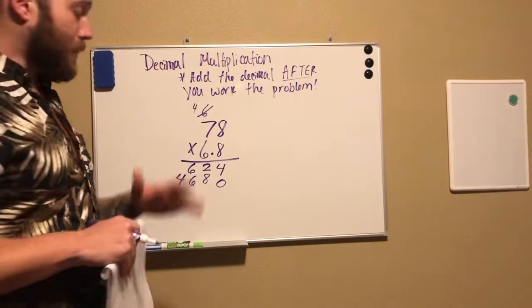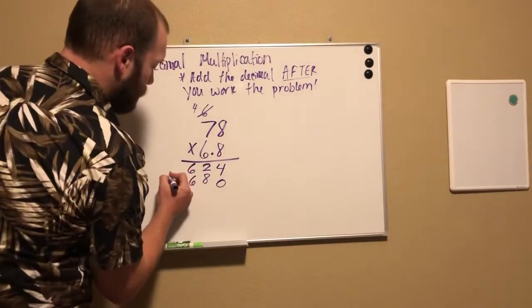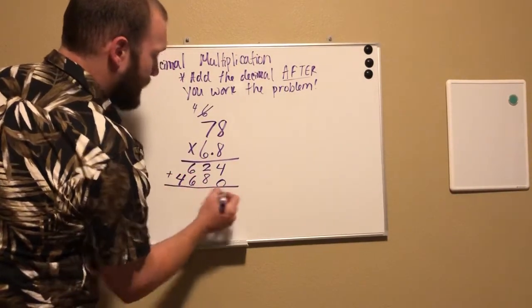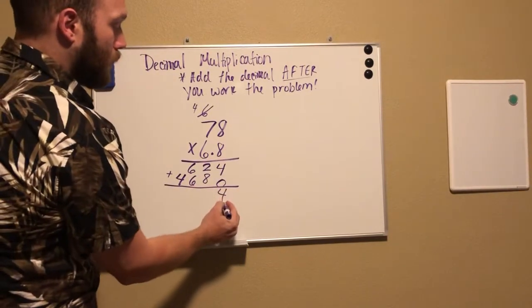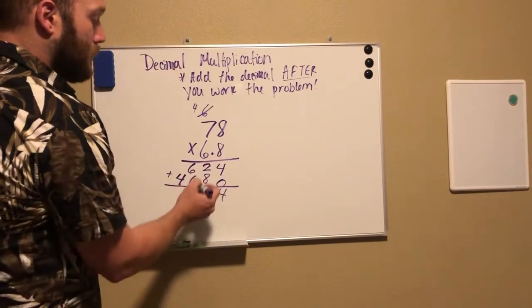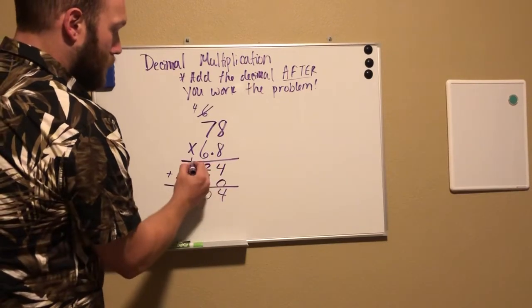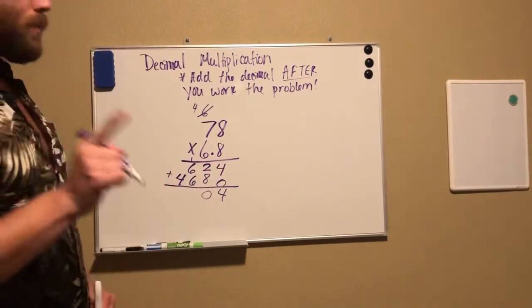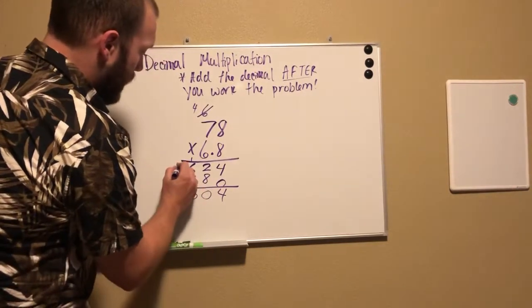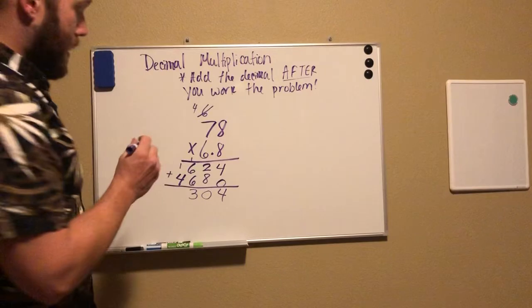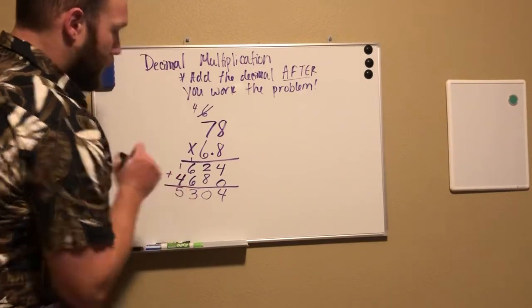So then we need to add these together: four plus zero is four, eight plus two is ten, six plus six is twelve plus one is thirteen, and one up here, four plus one is five. Nice job.